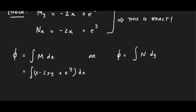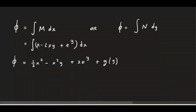Integrating x with respect to x gives (1/2)x². Integrating -2xy with respect to x, where y is a constant, gives -2x²/2, so the two cancels and we get -x²y. Integrating e^y with respect to x, treating it as a constant, gives x·e^y. Instead of a constant of integration, we add a function of the other variable, g(y), to bring N into the picture. So φ = (1/2)x² - x²y + x·e^y + g(y).